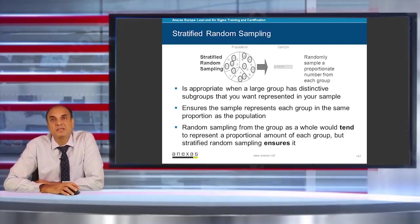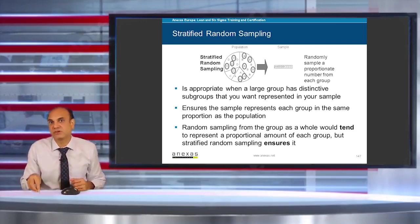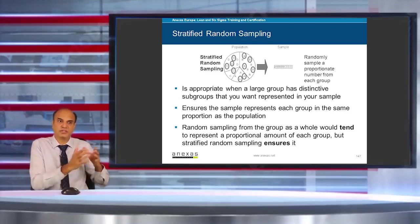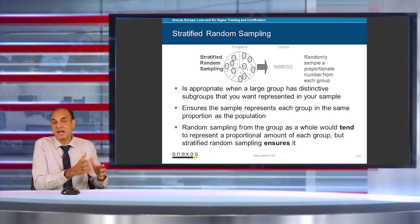Stratified random sampling means you stratify the data based on the categories of a particular X factor which you are trying to study. For example, if you are trying to study productivity in an organization and you feel that productivity is affected by shifts—morning shift is producing more, evening shift is producing a little less, and night shift the productivity is very low.